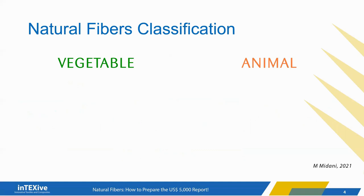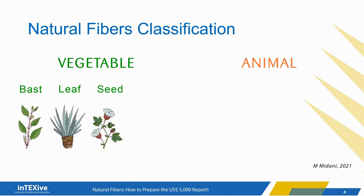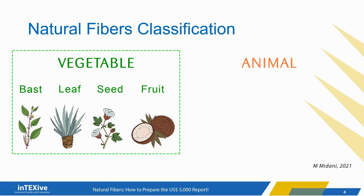Each of these can be further classified based on the source from which the fibers are obtained. For vegetable fibers, they are classified into bast fibers — extracted from the plant stem such as flax — leaf fibers extracted from plant leaves such as sisal, seed fibers obtained from plant seeds such as cotton, and finally fruit fibers such as coconut, also known as coir. For animal fibers, we have wool and hair from live animals, as well as silk from insects, and feathers and down from birds.